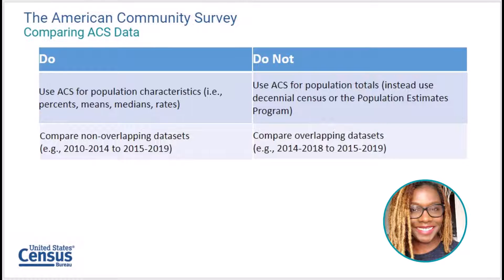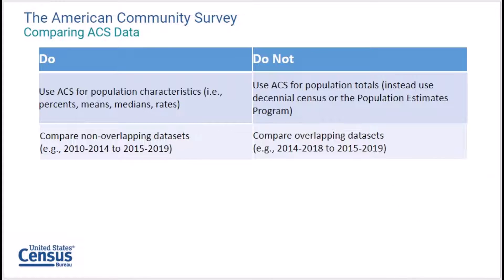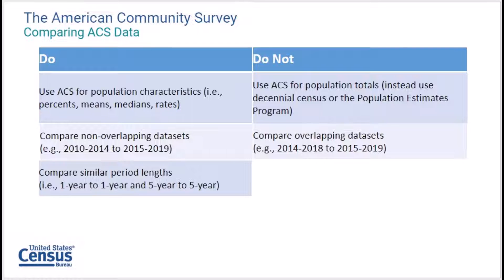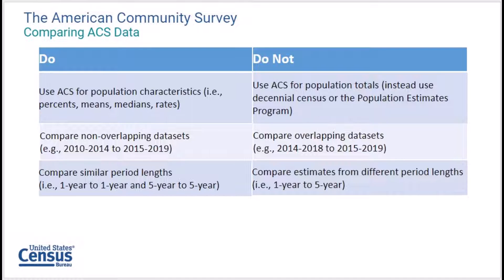Don't compare overlapping periods — for example, 2014 to 2018 ACS five-year estimates to the 2015 to 2019 ACS five-year estimates. Do compare similar period lengths — for example, one-year to one-year or five-year to five-year. Don't compare estimates from different period lengths — for example, don't compare one-year to five-year.